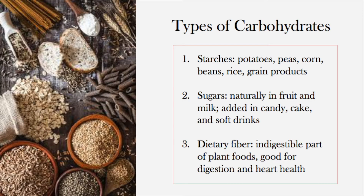Let's discuss the three types of carbs: starches, sugars, and dietary fiber. Starches are present in plant-based foods such as potatoes, peas, corn, beans, rice, and other grain products. Sugars occur naturally in foods such as fruit and milk, but there are also sources of added sugars found in highly processed foods such as candy, cake, and soft drinks. Dietary fiber is an indigestible part of plant foods that may help with digestion and heart health.